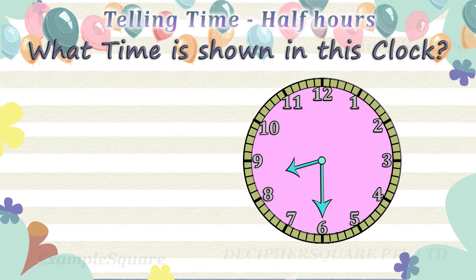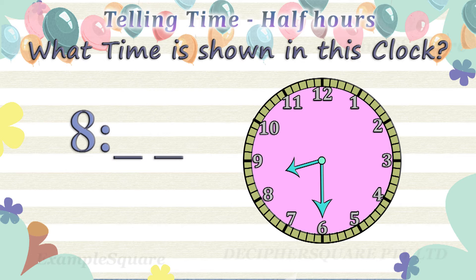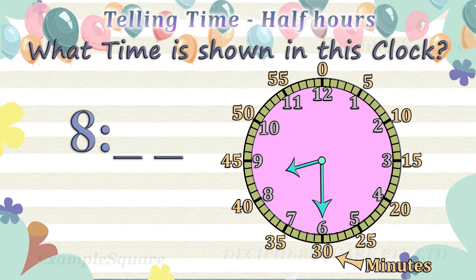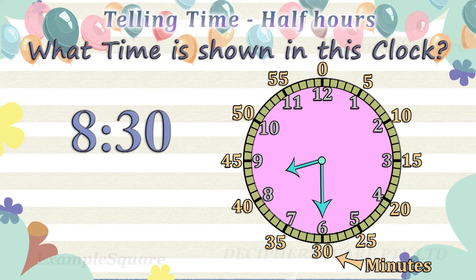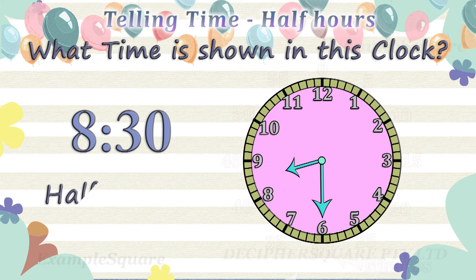What time is shown in this clock? The short hand, that is the hour hand, is pointing in between eight and nine, so the time is eight hours and some minutes. The long hand, that is the minute hand, is pointing at six — the minute hand is referring to thirty minutes. The time shown here is half past eight, or eight thirty.